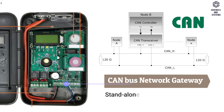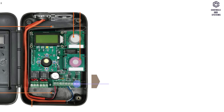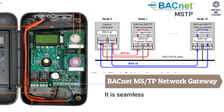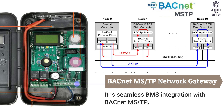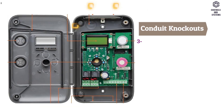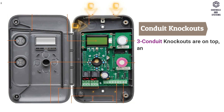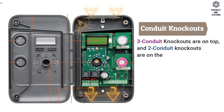This is CANBUS network gateway. It is a standalone operation with the CANBUS network. This is BACnet MS/TP network gateway. It is seamless BMS integration with BACnet MS/TP. There are three conduit knockouts on top and two conduit knockouts on the bottom.